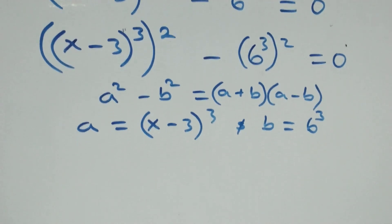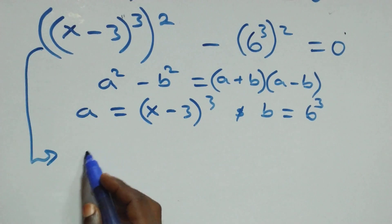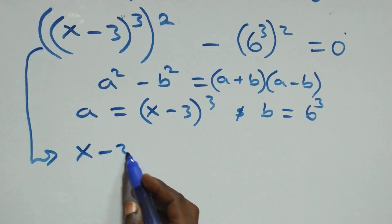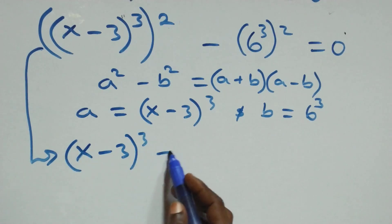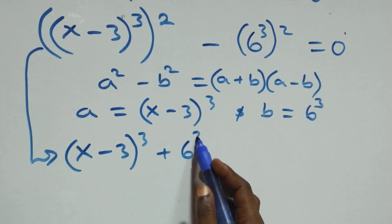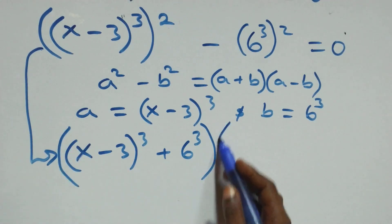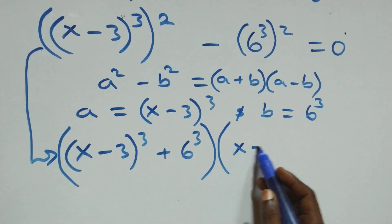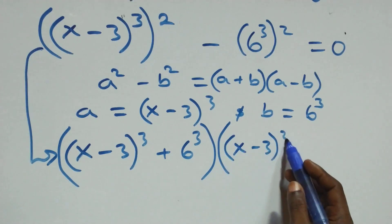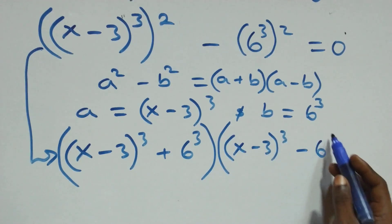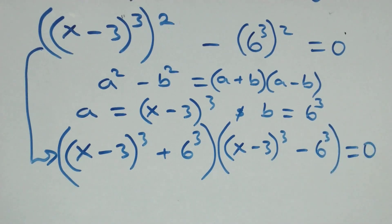Following this, it becomes: (x minus 3) raised to the power 3, plus 6 raised to the power 3, in brackets, times (x minus 3) raised to the power 3, minus 6 raised to the power 3, close bracket, equals to 0.